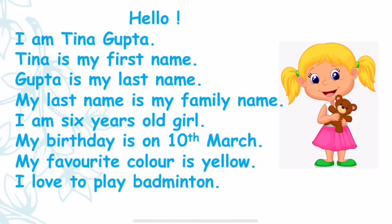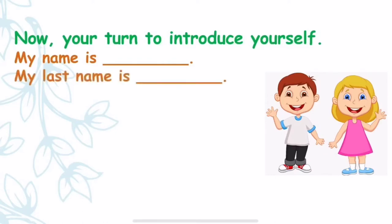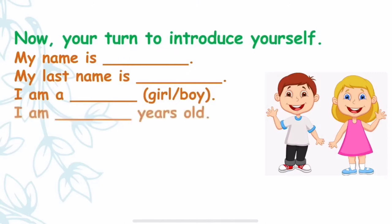Now it's your turn to introduce yourself. I will help you a little bit. My name is — you have to tell your name here. My last name is — here you have to tell your family name or surname. I am a — you have to mention whether you are a girl or a boy. I am blank years old — here you have to tell your age. I am in class — you have to tell which class you study in. I am sure you must be in class 1, and if you want, you can add your section also, like class 1A.